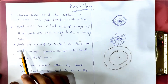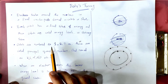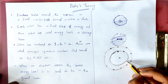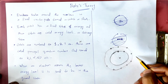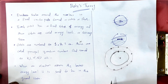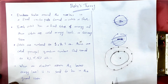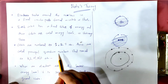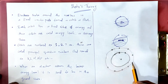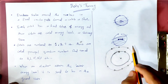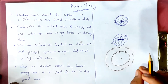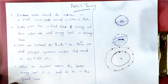The orbits are numbered as 1, 2, 3, etc. These numbers are called principal quantum numbers.